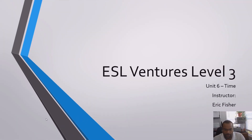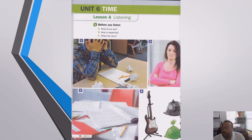Alright guys, now we're on my computer. Let's take a look at Unit 6 Time — we're talking about time management. So the question is: what do we see? We're on page 70, and the question is, what do you see?